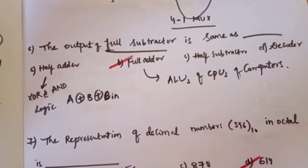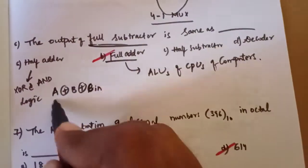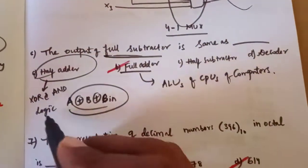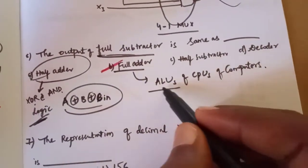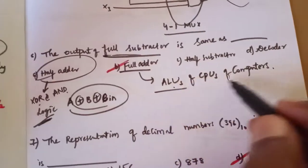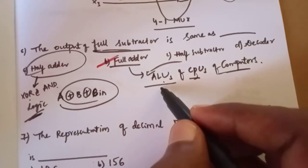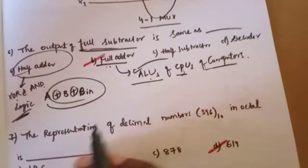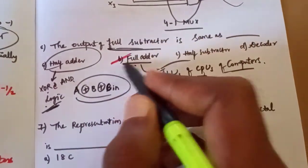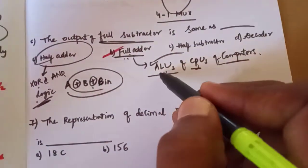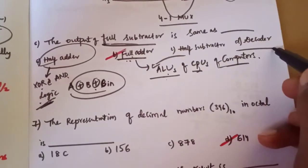We have to use a full subtractor and a full adder. Full adders use XOR and NOR gates. Full adders are mostly used in ALUs and CPUs as logical units. Applications of full adders include decoders as well.